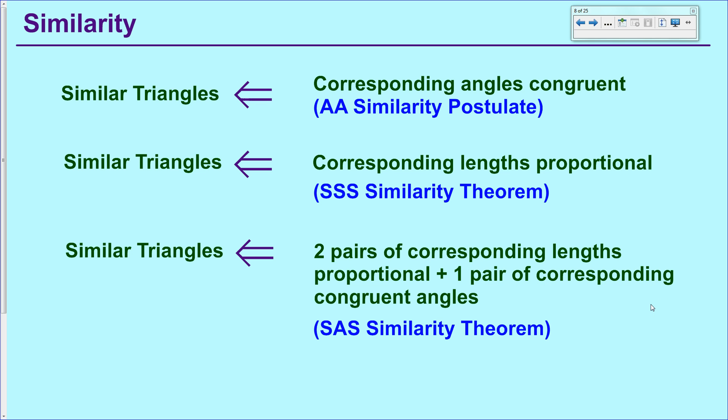you also need one pair of corresponding congruent angles. So this time we're mixing proportional and congruency. The angles are congruent and the sides, the lengths of the sides are proportional to each other. So you have to keep that straight.